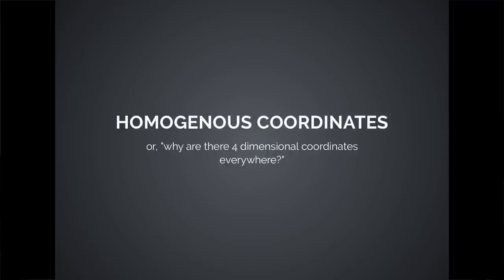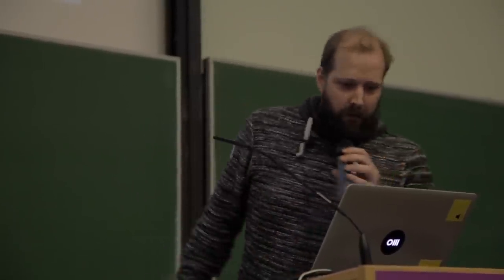Another thing to be aware of is homogeneous coordinates. This is a weird term, but if you start diving into 3D graphics, you will see four-dimensional coordinates everywhere. Don't worry — they simply describe a point in 3D space; they have x, y, and z coordinates. The fourth value is used to enable some mathematical tricks required for certain calculations you don't need to worry about.